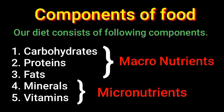Minerals and vitamins are required in very small quantities, so they are called micronutrients. Both macronutrients and micronutrients are essential for the body, but they differ in the quantities needed. There is one more important component of food, which will be covered in the next video. Thank you.